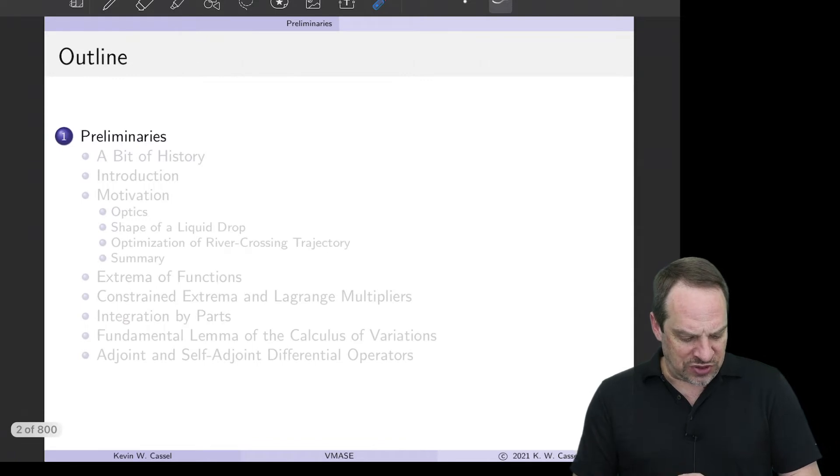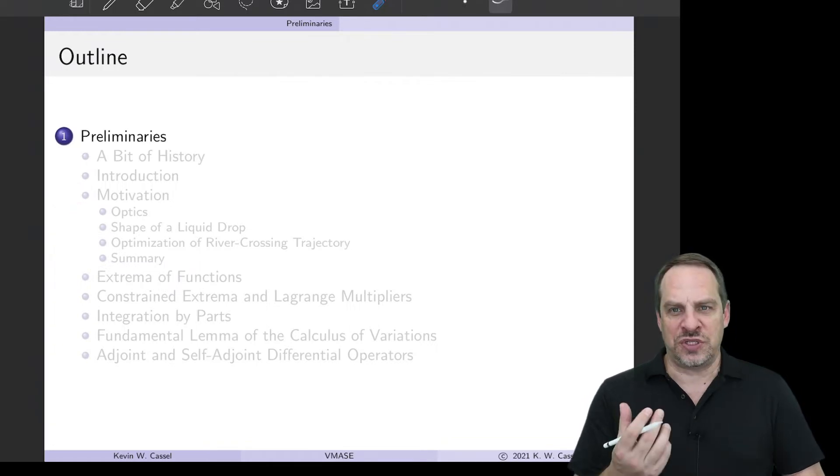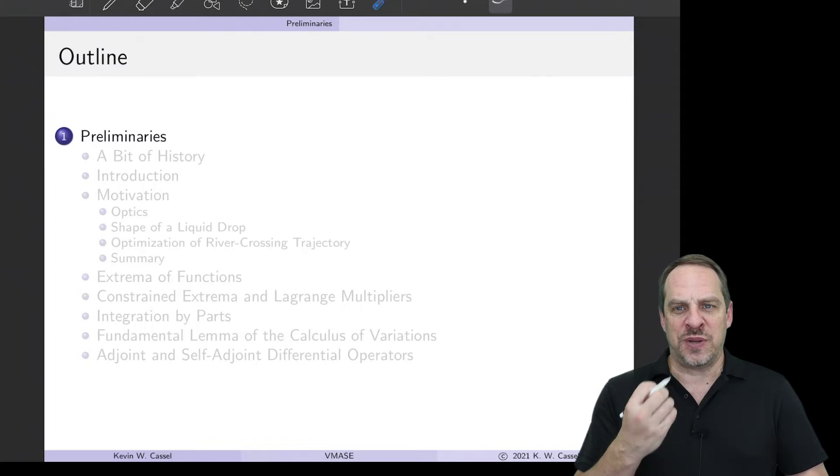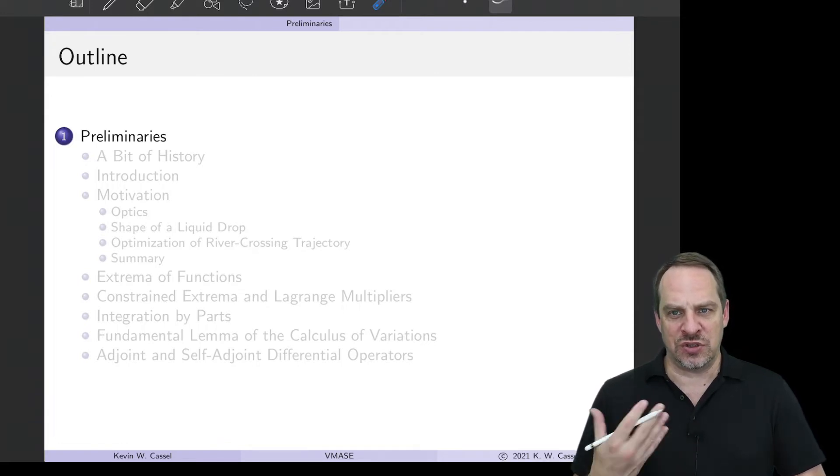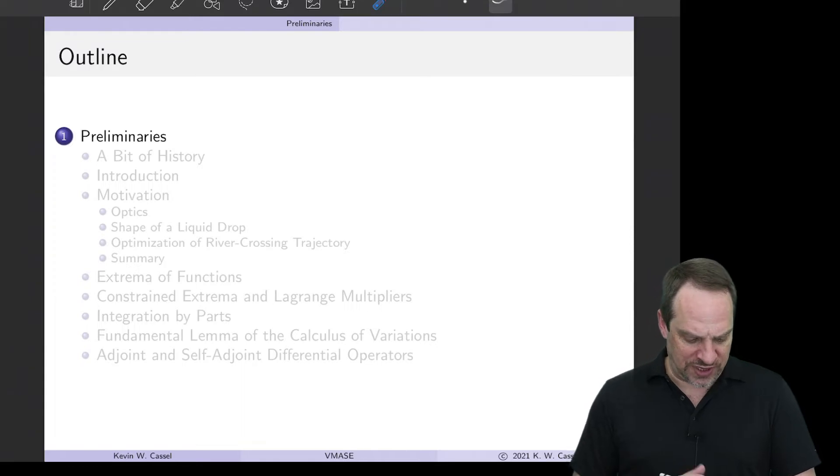So we're going to discuss these first two sections, a bit of history and an introduction. And then in the following few videos, we're going to look at some motivational examples. I want to show you by example from physical problems, optimization problems, where this variational method comes from, where the need arises for us as scientists and engineers to be able to solve problems using these variational techniques.